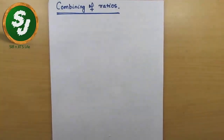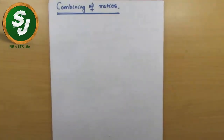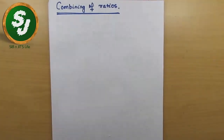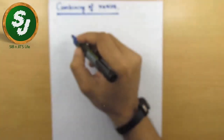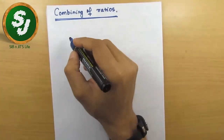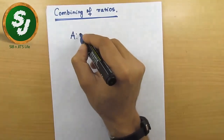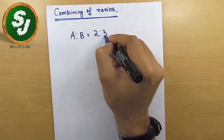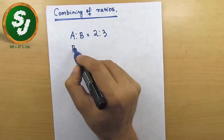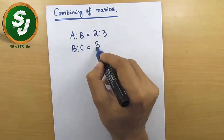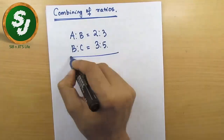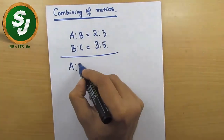Welcome back. In this video we will be learning a new technique called combining of ratios, in which we will combine two or three different ratios into one. For example, given a:b = 2:3 and b:c = 3:5, find the value of a:b:c.